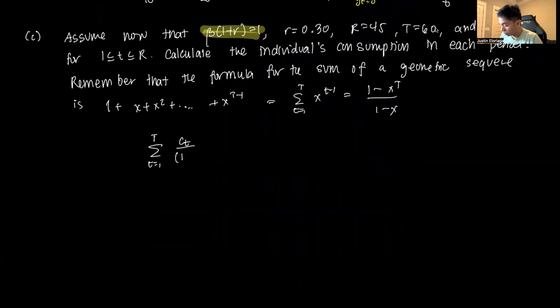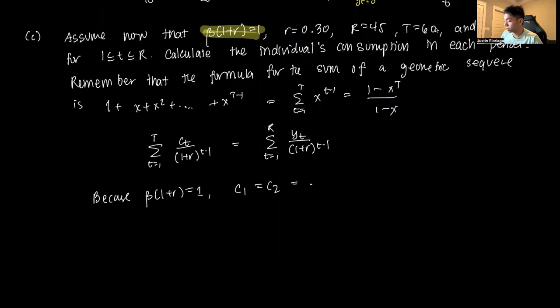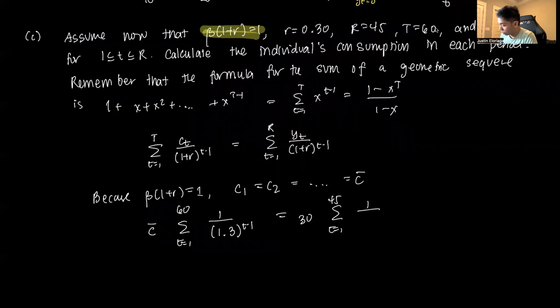Assume now that this condition still holds with other values. We can use our approach from earlier. Recall the intertemporal budget constraint. Because beta times (1+R)=1, C1=C2=C-bar. This gives us C-bar times sum from t=1 to T of 1/(1+r)^(t-1). The rate here is 0.3, so 1/(1.3)^(t-1).